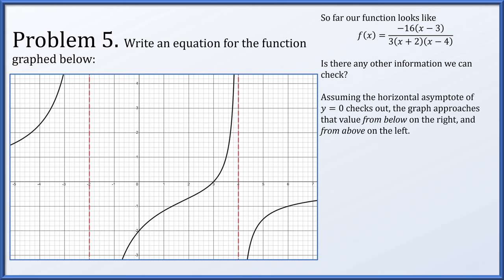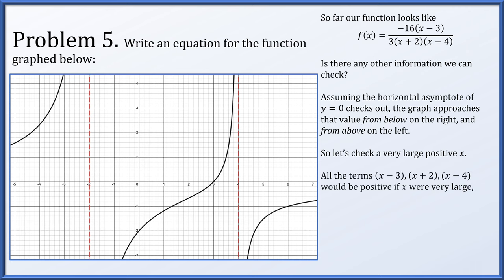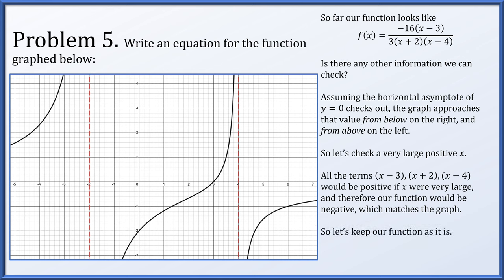Assuming the horizontal asymptote really is y = 0, the graph appears to approach from below on the right and from above on the left. For very large positive values of x, all factors (x-3), (x+2), and (x-4) are positive, but the numerator has that -16, so the function is negative overall. That checks out — approaching 0 from below on the right. So our function appears to be good as is: f(x) = -16(x-3) / (3(x+2)(x-4)).